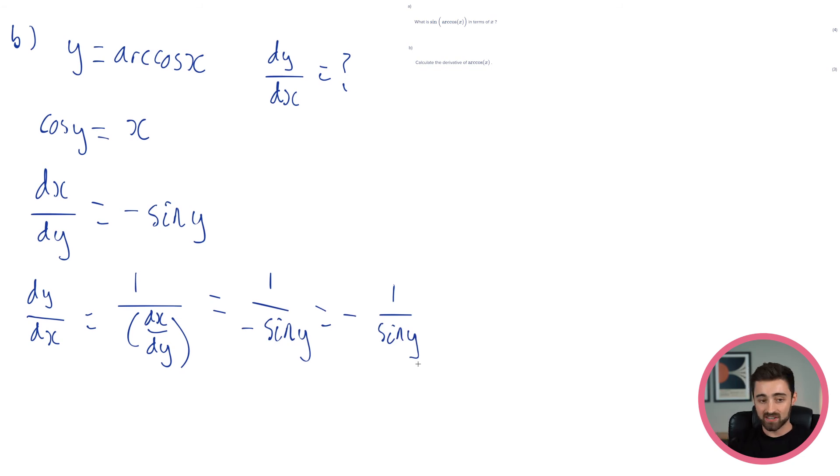Okay, not quite the answer, though, and the reason is, is because I've defined this extra y, but I don't want that. I need this in terms of x, don't I? So, if x is cos y, but I have sine y, how am I going to get this in terms of x? It's all about how we relate sines and cosines.